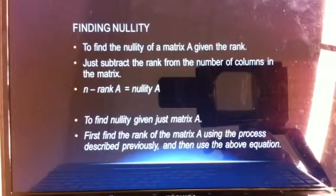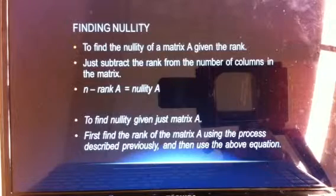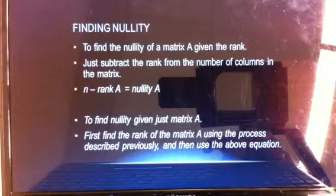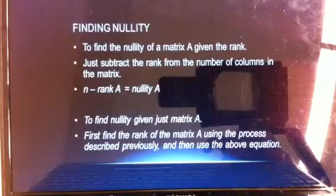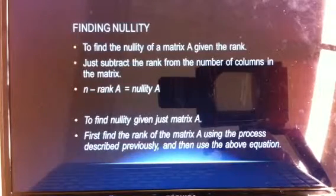To find the nullity of a matrix given the rank, you just subtract the rank from the number of columns in that matrix. So, the number of columns minus the rank is equal to the nullity.